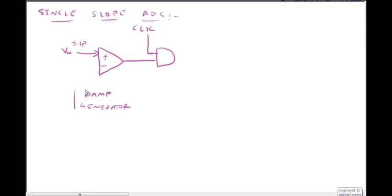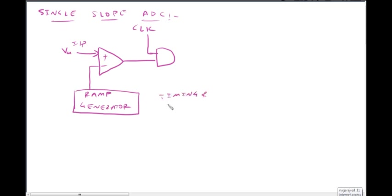It is the Ramp Generator. The Ramp Generator output goes to the negative terminal of the Comparator. It is the Timing and Control Signals Block. The output of the Ramp Generator feeds into this block.